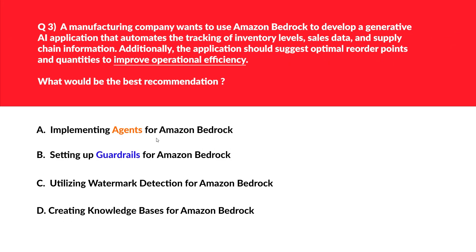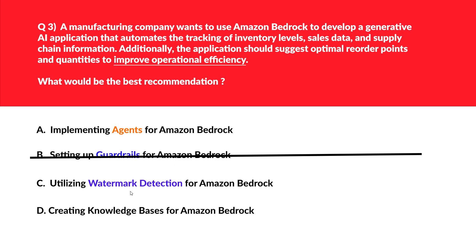This question is about improving operational efficiency. Option A says: implementing agents for Amazon Bedrock — agents can be trained to monitor and analyze data as well as make recommendations, aligning with the company's requirement. Let's park this. Option B says: setting up guardrails for Amazon Bedrock — guardrails are used for policy and compliance and not for operational efficiency recommendations, so wrong answer.